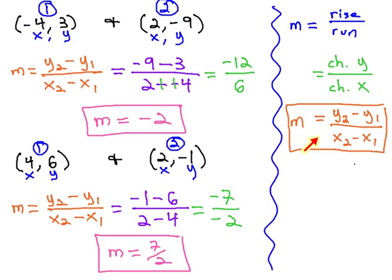By remembering the formula that slope is y2 minus y1 over x2 minus x1, we can quickly plug our values from our points into the formula and find the slope between any two points.